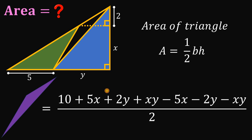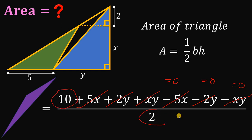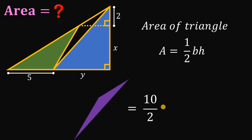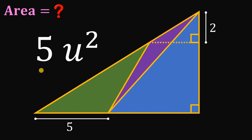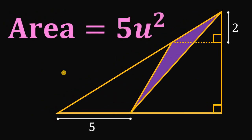Here's the good thing: we have positive 5x and negative 5x, which equals 0. We also have positive 2y and negative 2y, also equal to 0. And positive xy and negative xy, also equal to 0. What's left in the numerator is just 10, and the denominator is 2. So 10 divided by 2 gives us 5. Therefore, the area of the shaded region is equal to 5 square units, and we are done.